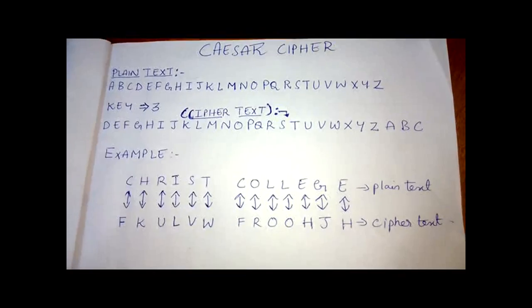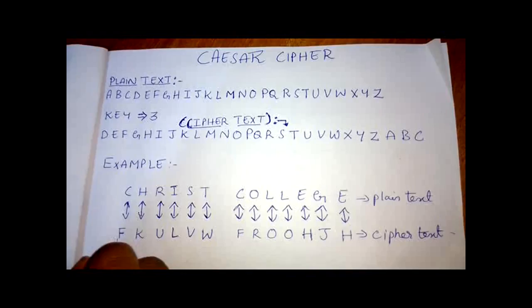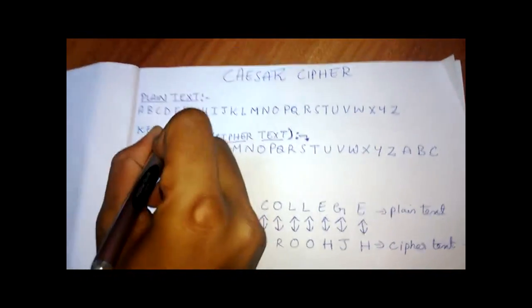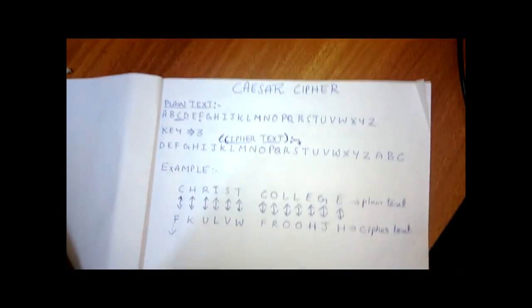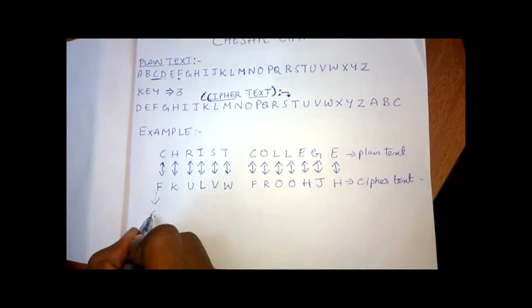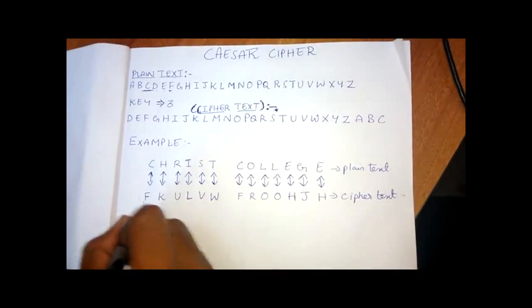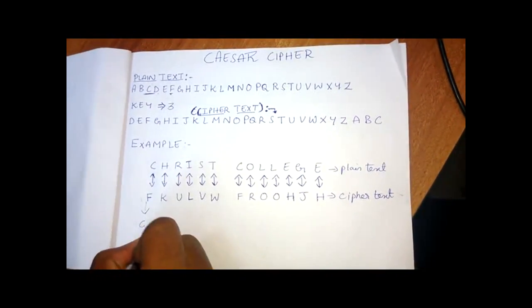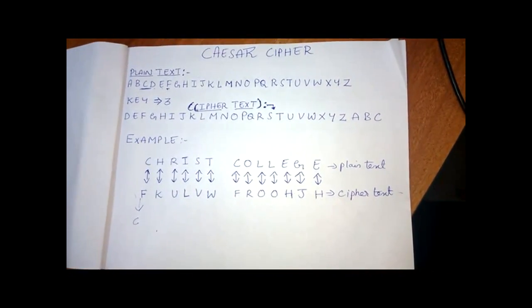The decryption follows the same procedure where F is taken and moved back 3 alphabets. So F, 1, 2, 3. So C becomes the decrypted text. As you apply the decryption on the whole encrypted text, you get the same text back and the Caesar cipher is done.